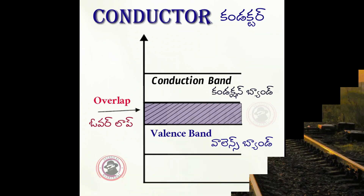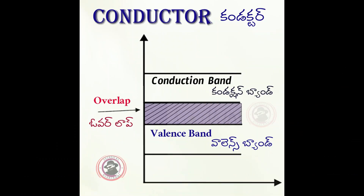We are going to discuss the conductor band diagram. If you look at the conductor band diagram, you can see there is a valence band and a conduction band. The valence band and the conduction band have an overlap.